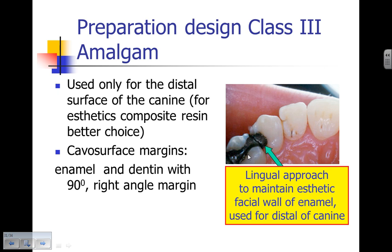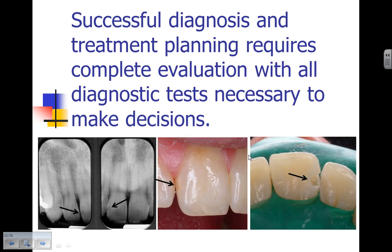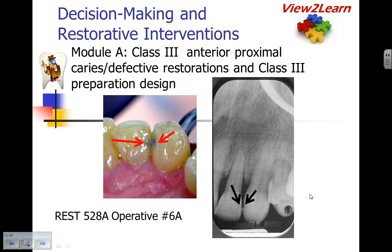When making our decisions for Class 3s — looking at a Class 3 carious lesion on the distal of a maxillary right central incisor — radiographically it's through the enamel into the dentin. Clinically the enamel is demineralized, and after tooth preparation the lingual margins are at right angles while the facial margins are slightly beveled. Good diagnosis and treatment planning requires a complete evaluation using all diagnostic tests necessary to make an adequate decision. This concludes Decision Making and Restorative Interventions, Module A on Class 3 Anterior Proximal Caries, Defective Restorations, and Class 3 Preparation Design.